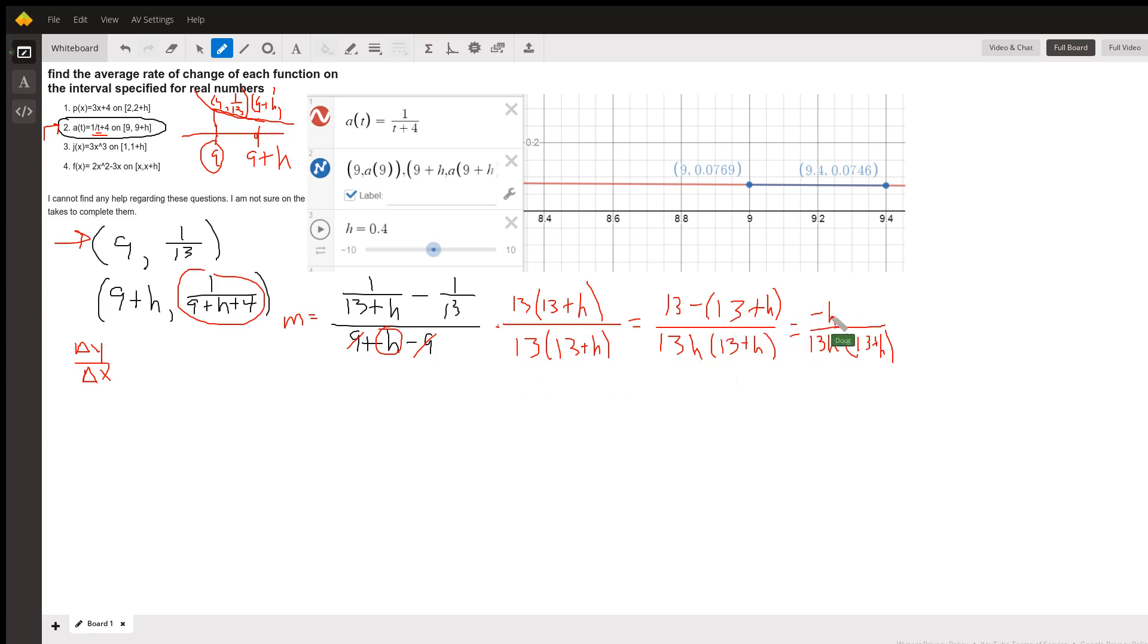In the numerator, I get minus h over 13h times the quantity (13 plus h), and I got one more step, and that's to cancel out these h's. So in the end, I get minus 1 over 13 times (13 plus h).